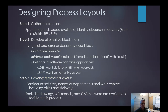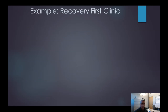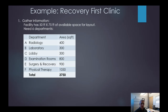Let's take an example — a recovery first clinic. First, we gather some information. The facility has 50 feet by 75 feet of available space. We also know that we need six departments based on the specialties of this clinic: radiology, laboratory, lobby (where they have intake), examination rooms, surgery and recovery, and physical therapy.